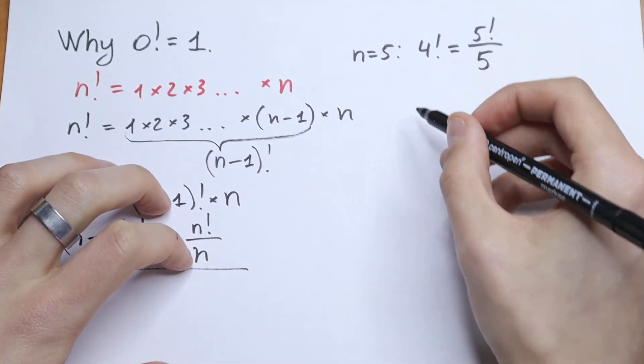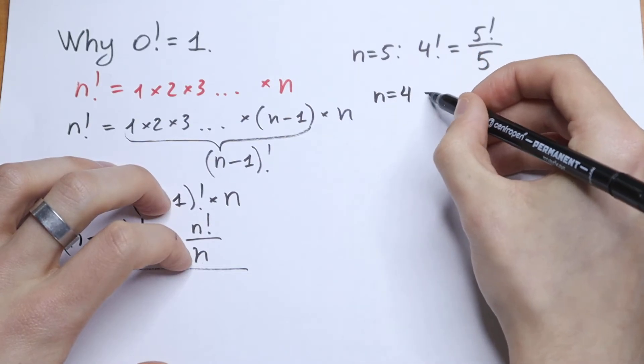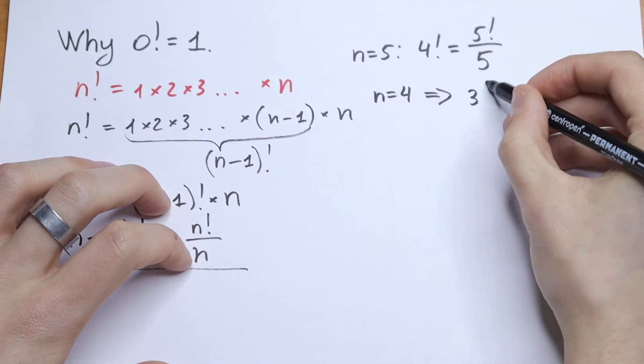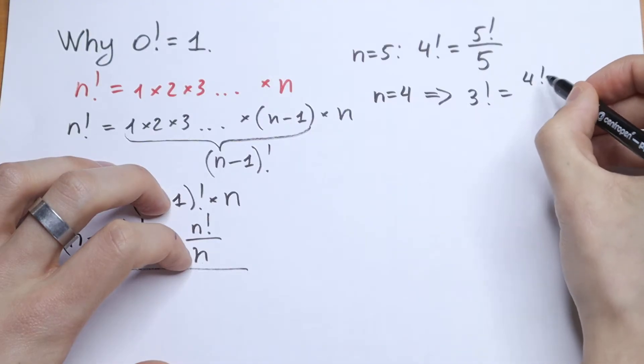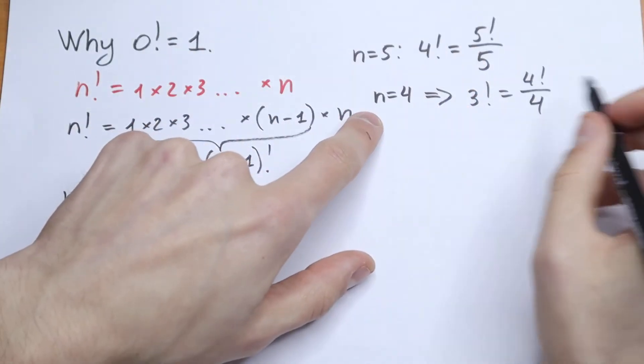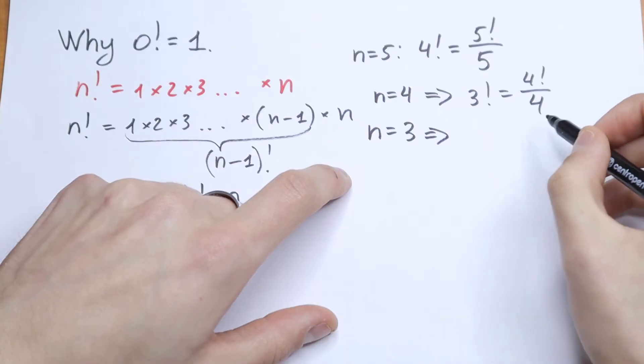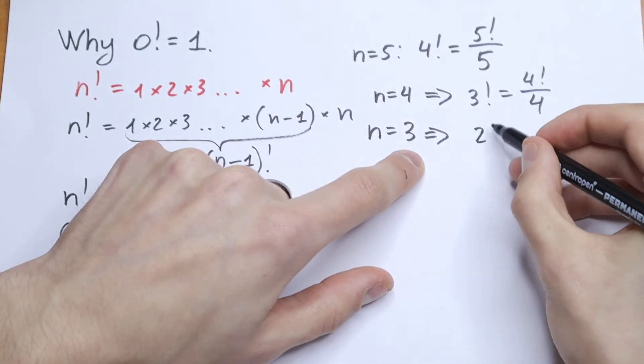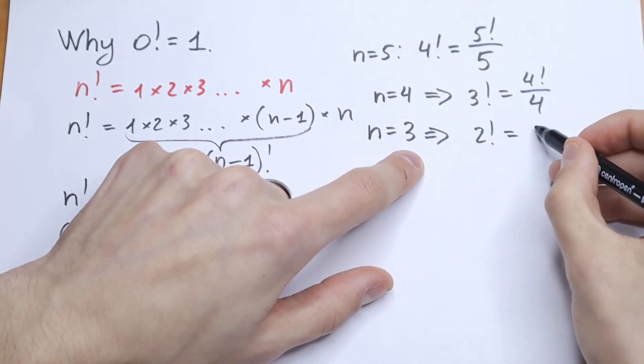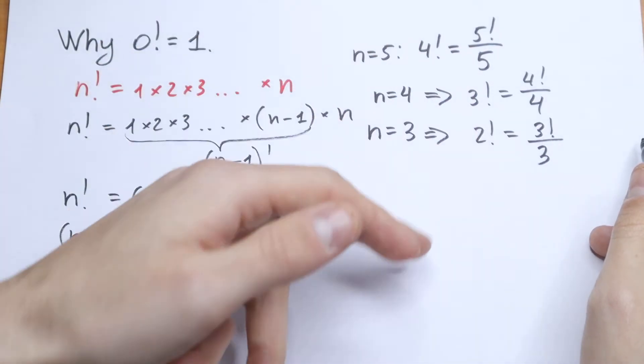So let's find n equal to 4. If n equal to 4, we will have that 3 factorial equal to 4 factorial over 4. Let's get closer. Let's find n equal to 3. We will have that 2 factorial equal to 3 factorial divided by 3.